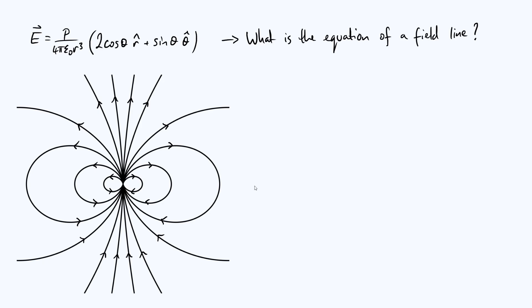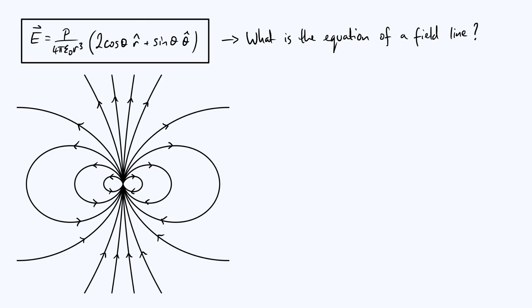In this video we're going to take the specific example of an electric dipole. The electric field of a dipole is given at the top left in polar coordinates r and theta — I have another video deriving that — but the method we're going to look at here is definitely generalizable to any electric field.